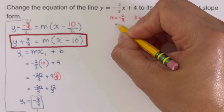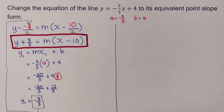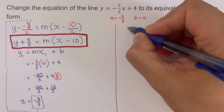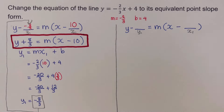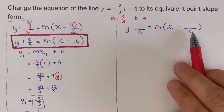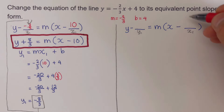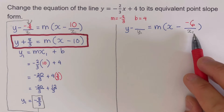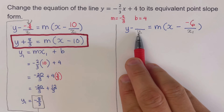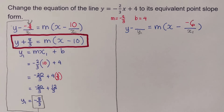Now I'd like you to try the next example. I'll set up the general point-slope form equation. We can pick any value for x sub 1 — suppose in this problem I pick negative 6 for x sub 1. I'd like you to figure out what y sub 1 will be when x sub 1 is negative 6.